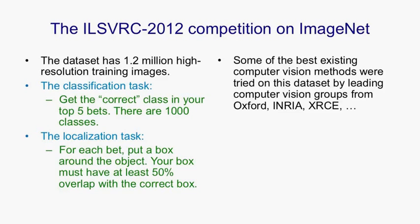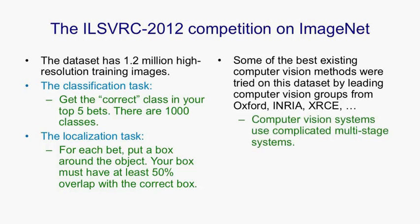On this task, people tried some of the best existing computer vision methods. Leading groups from Oxford, the French National Research Labs INRIA, Xerox's European Research Centre, and various other universities tried this task and discovered it's very hard. The computer vision systems typically use complicated multi-stage systems.